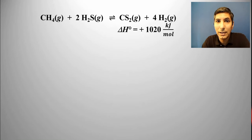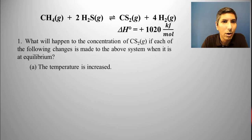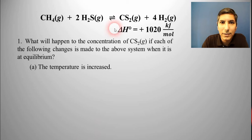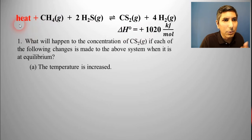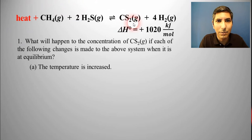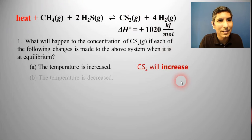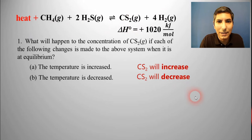Let's try a couple examples. This one actually is an endothermic reaction. What's going to happen if we increase the temperature? Since delta H is positive, this is an endothermic reaction, which means heat is a reactant. If we increase the temperature, we're adding heat, so it's going to cause the equilibrium to shift toward the right, and we're going to make more carbon disulfide — CS2 is going to go up, along with hydrogen. And if we decrease the temperature, we're taking away heat, so we have to replenish that by using up the products — CS2 is going to decrease.